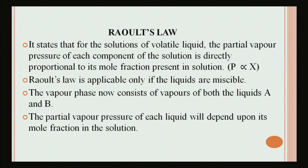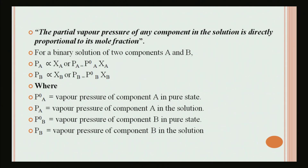Raoult's law states that for a solution of volatile liquids, the partial vapor pressure of each component of the solution is directly proportional to its mole fraction present in the solution — that is, P is directly proportional to X. Raoult's law is applicable only if the liquids are miscible. The vapor pressure now consists of vapors of both liquid A and B, and the partial vapor pressure of each liquid will depend on its mole fraction in the solution.